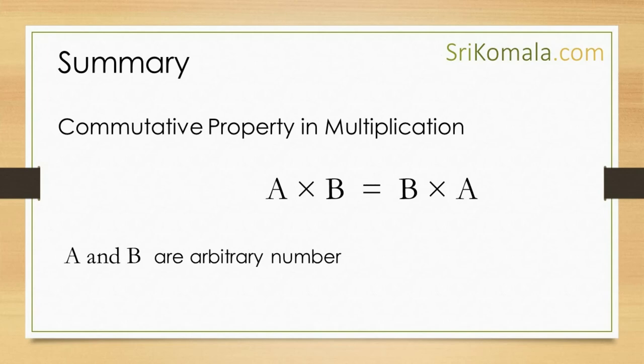Summary. It can be understood from the discussion above that the commutative property in multiplication is preserved. In other words, A times B is equal to B times A. Here, A and B are arbitrary numbers or any numbers. The commutative property is preserved whether A is equal to B or A is less than B or A is greater than B.